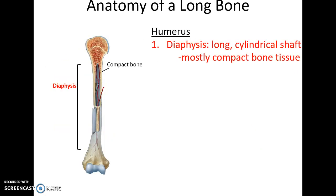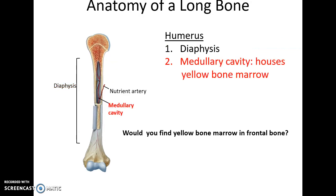Looking at the anatomy of a long bone, we see it has a diaphysis — a long cylindrical shaft made primarily of compact bone tissue. Within the shaft is the medullary cavity, a space filled with yellow bone marrow.